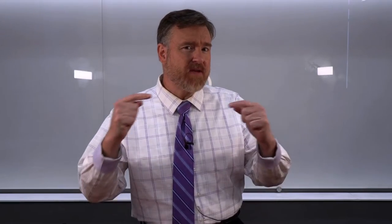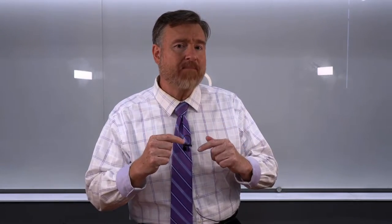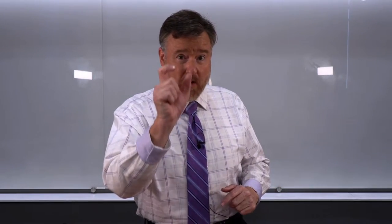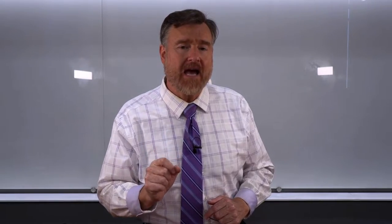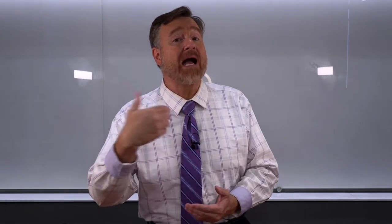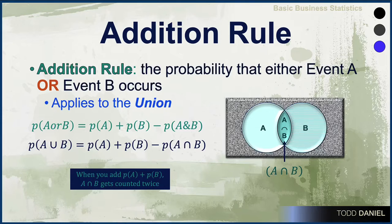What is happening is that when two events overlap and there is one part that they share in common, that part gets counted twice. That's why we need to subtract something out of the probabilities.